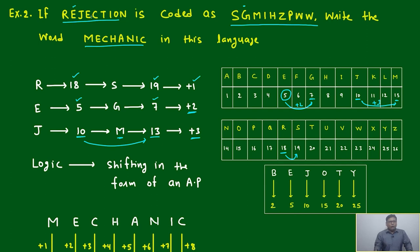In a similar way, we will just convert all the alphabets of REJECTION in the same format. The logic is shifting in the form of an AP which will start from 1 with common difference also 1. So first term is 1, common difference is 1.